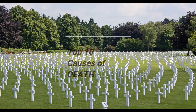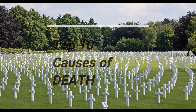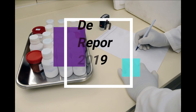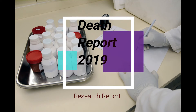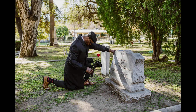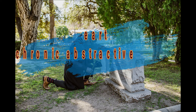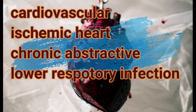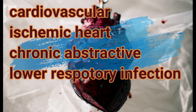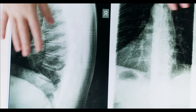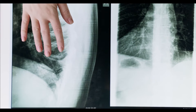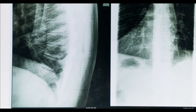This video shows the top 10 causes of death in 2019 in order of total number of lives lost. These are associated with three broad topics: cardiovascular — ischemic heart disease and stroke; respiratory — chronic obstructive pulmonary disease, lower respiratory infections; and neonatal conditions, which include birth asphyxia, birth trauma, neonatal sepsis and infections, and preterm birth complications.